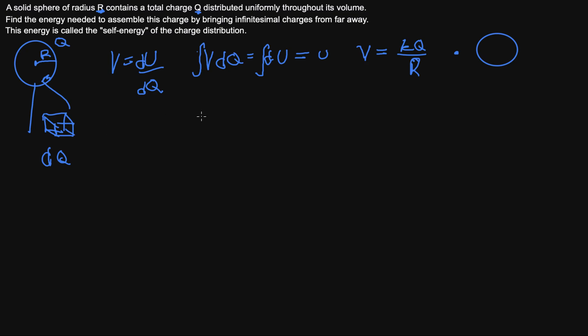If we work with that, we can say, I'm just going to clean that up. If we're using this relationship here, what we're going to need to do is say, okay, I can put this in now for my v here. So we can write the integral of k q over r times dq is equal to u, right?